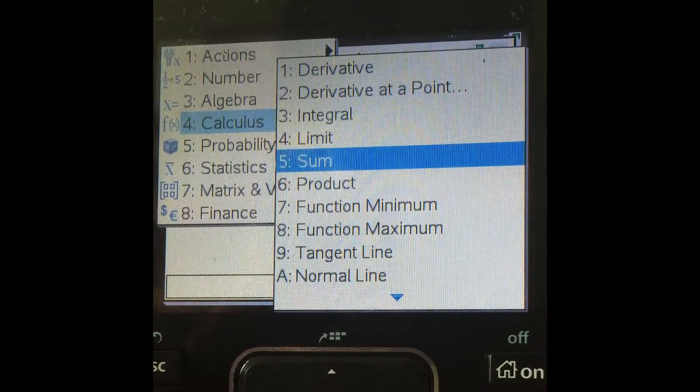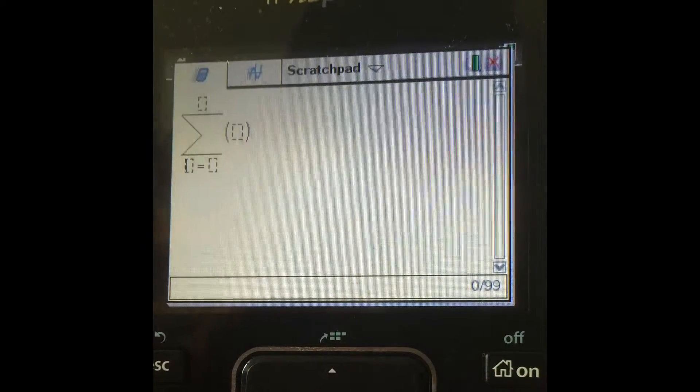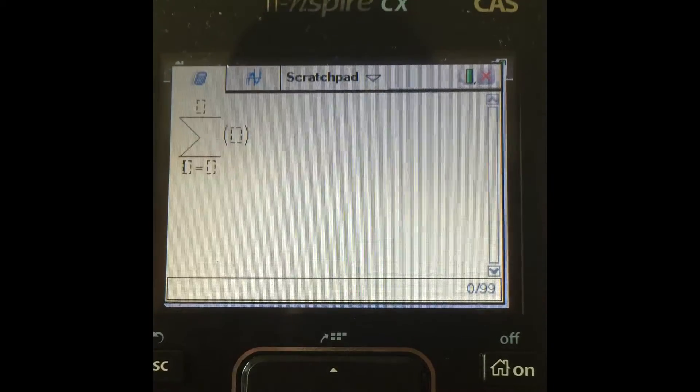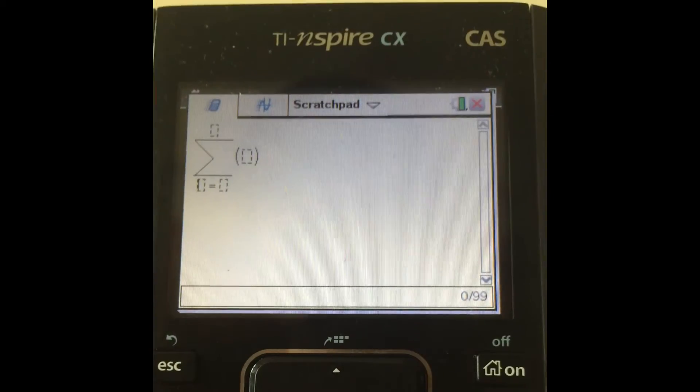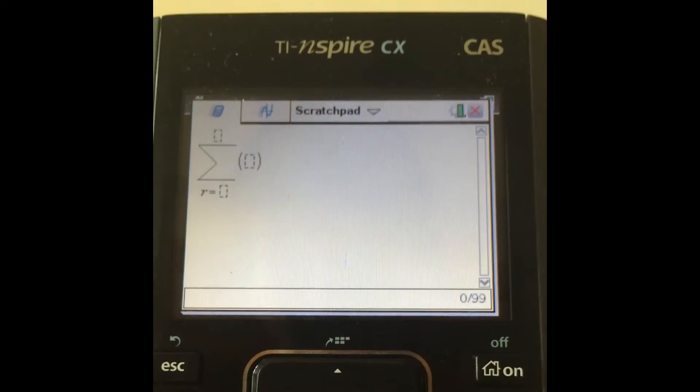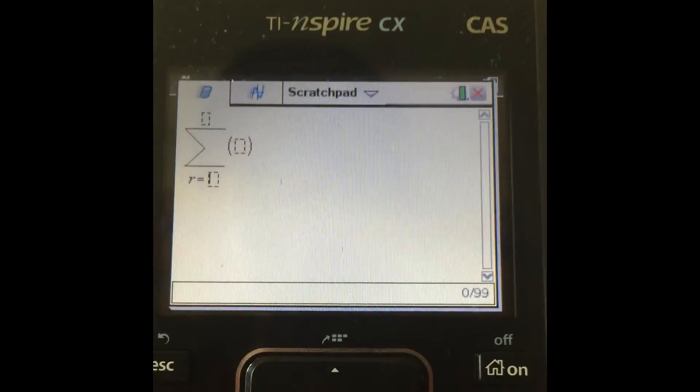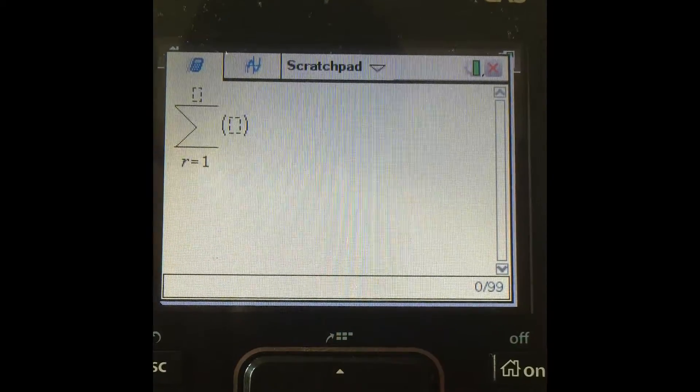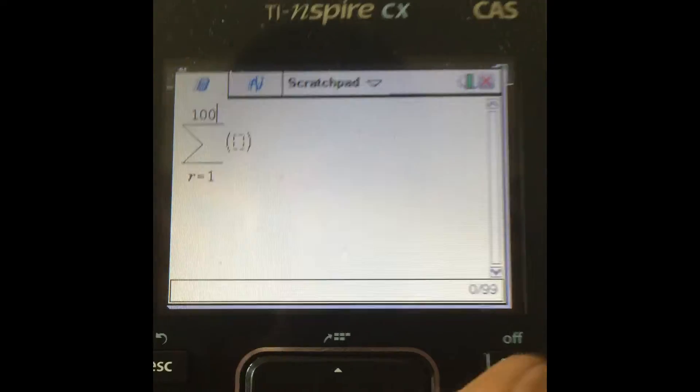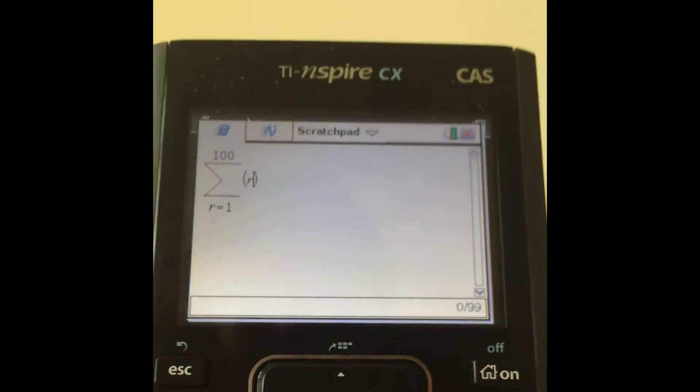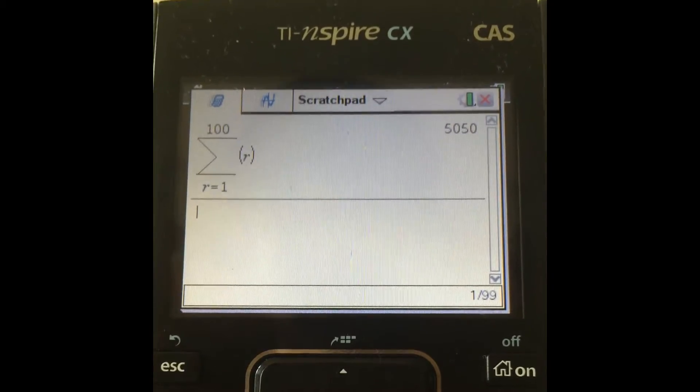There's also this option of sum and product. So sum is basically when you want to add up a series, for example, or a sequence. So you start with whatever variable you're dealing with, for example r, and then you set it to some initial value of 1. And then you want to add it up all the way to 100. And you want to add up r, so like the sum of numbers from 1 to 100, then it gives it to us 5050.